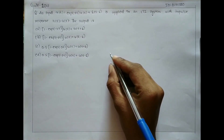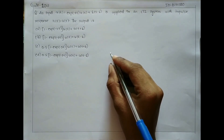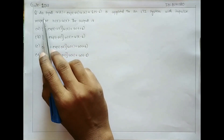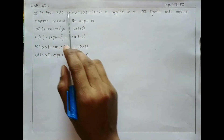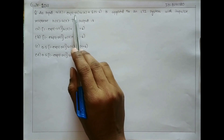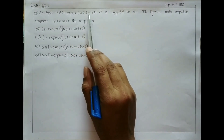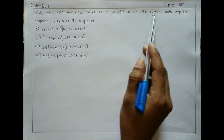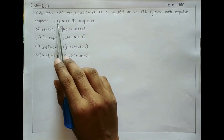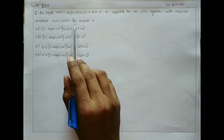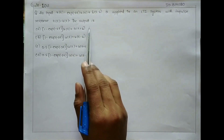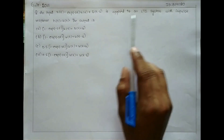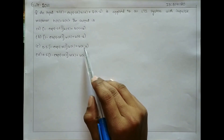Hello everyone. Now I am going to solve a GATE 2011 question. The question is: an input x(t) equals exponential of minus 2t into u(t) plus delta(t minus 6) is applied to an LTI system with impulse response h(t) equals u(t). We need to find the output, choosing one of the four given options.